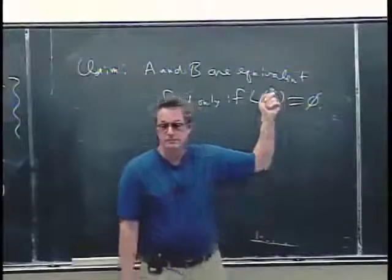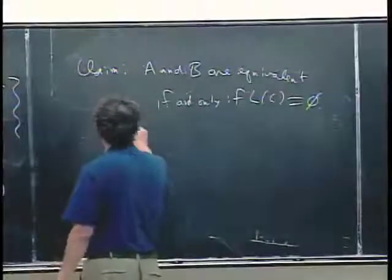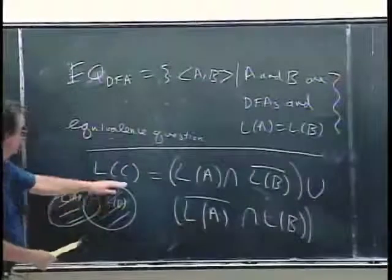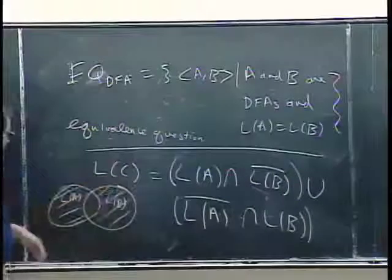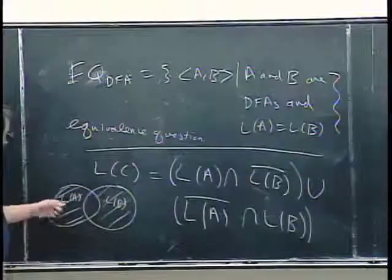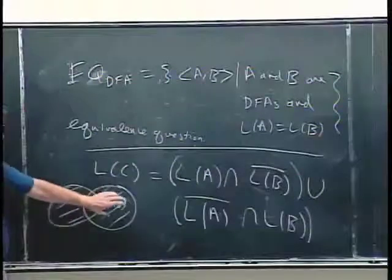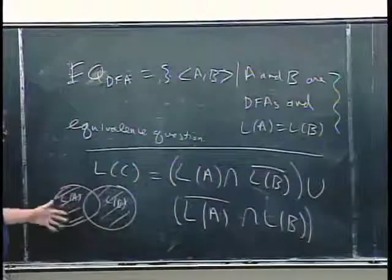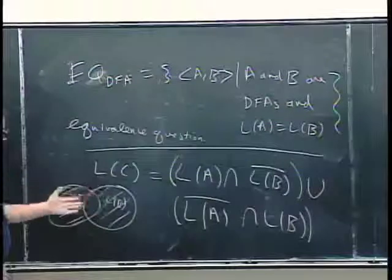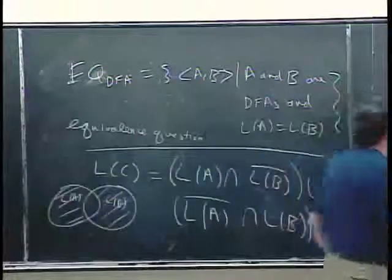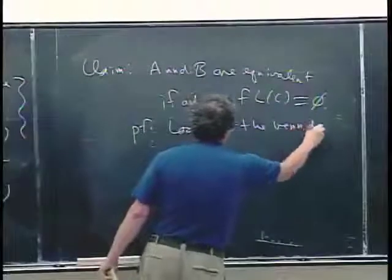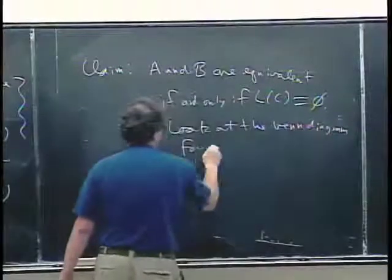That's the critical observation: A and B are equivalent if and only if L of C is empty, because equivalence means the two circles in the Venn diagram should be identical — there should be nothing accepted by A but not by B, and nothing accepted by B but not by A. If L of C is empty, L of A equals L of B.